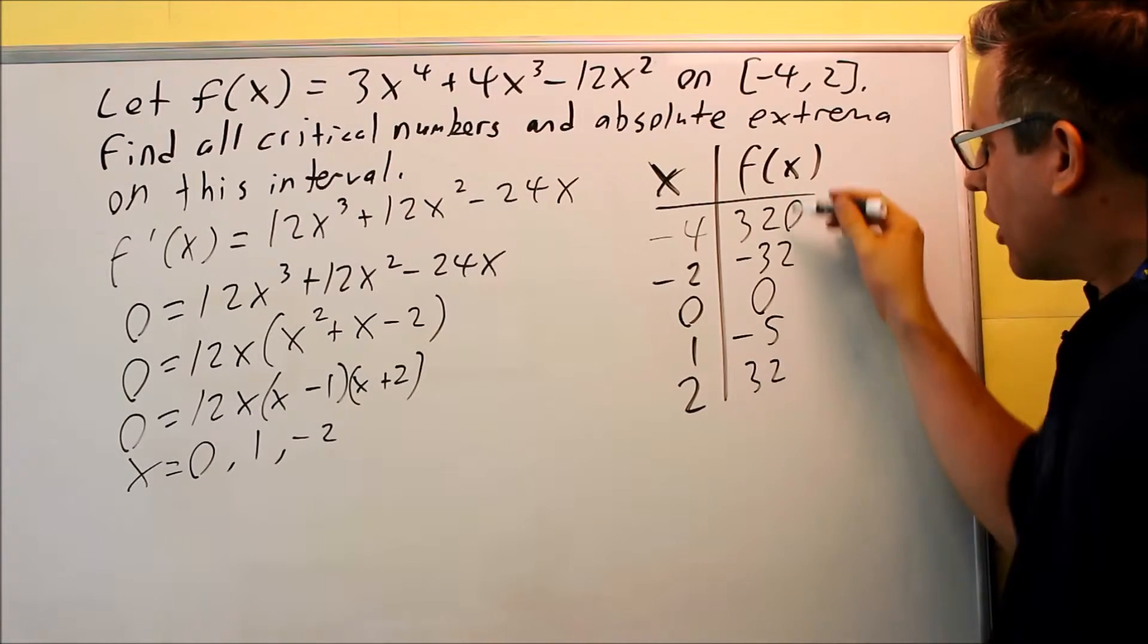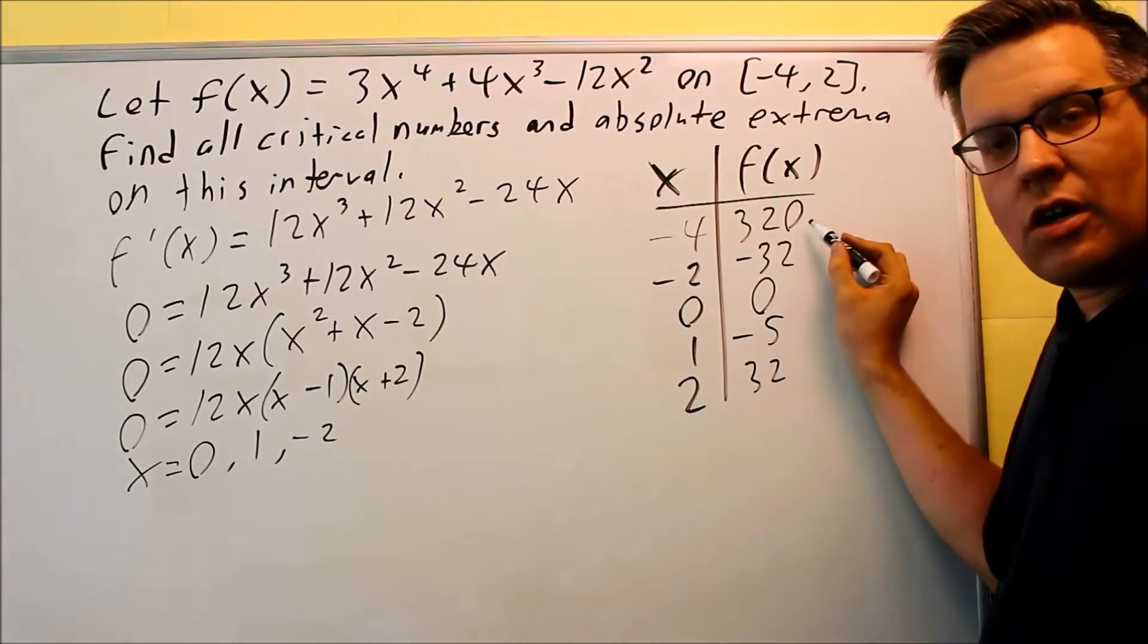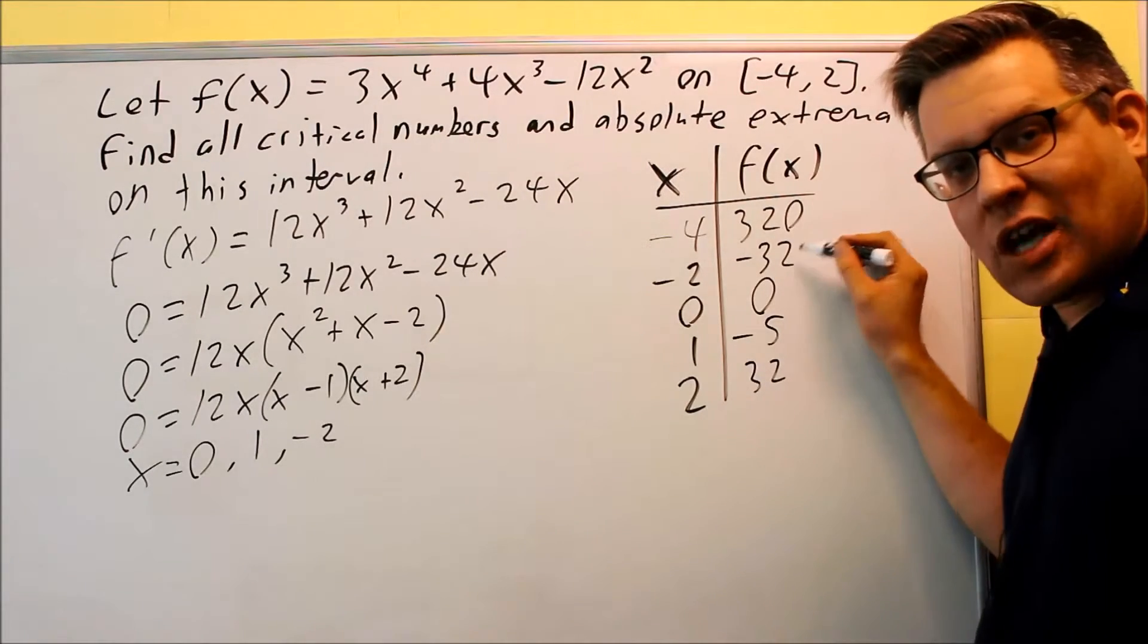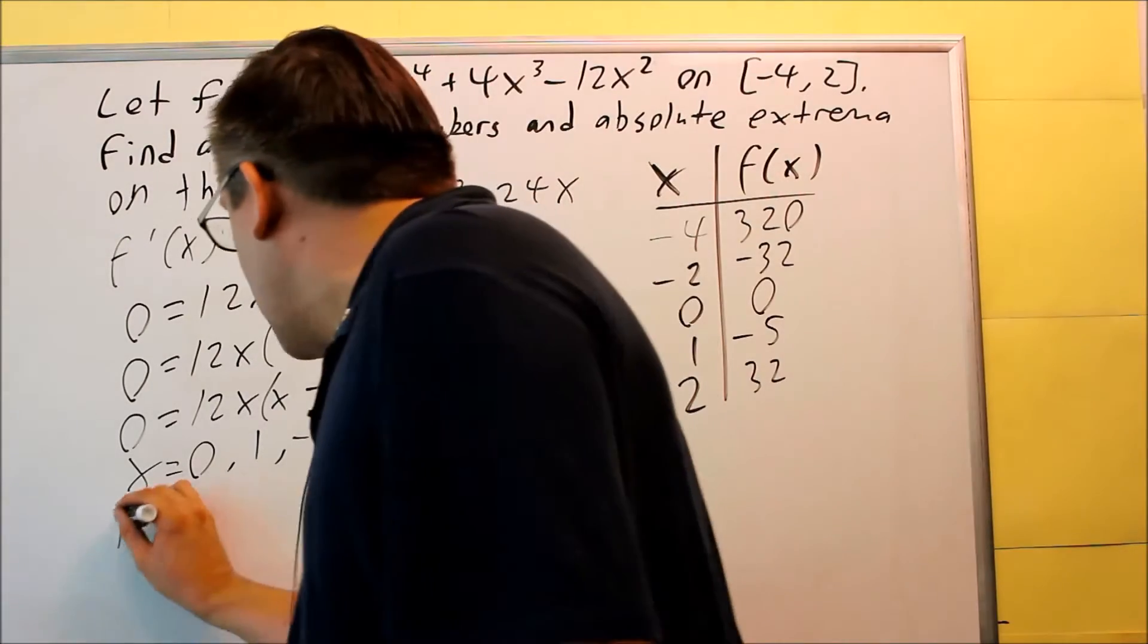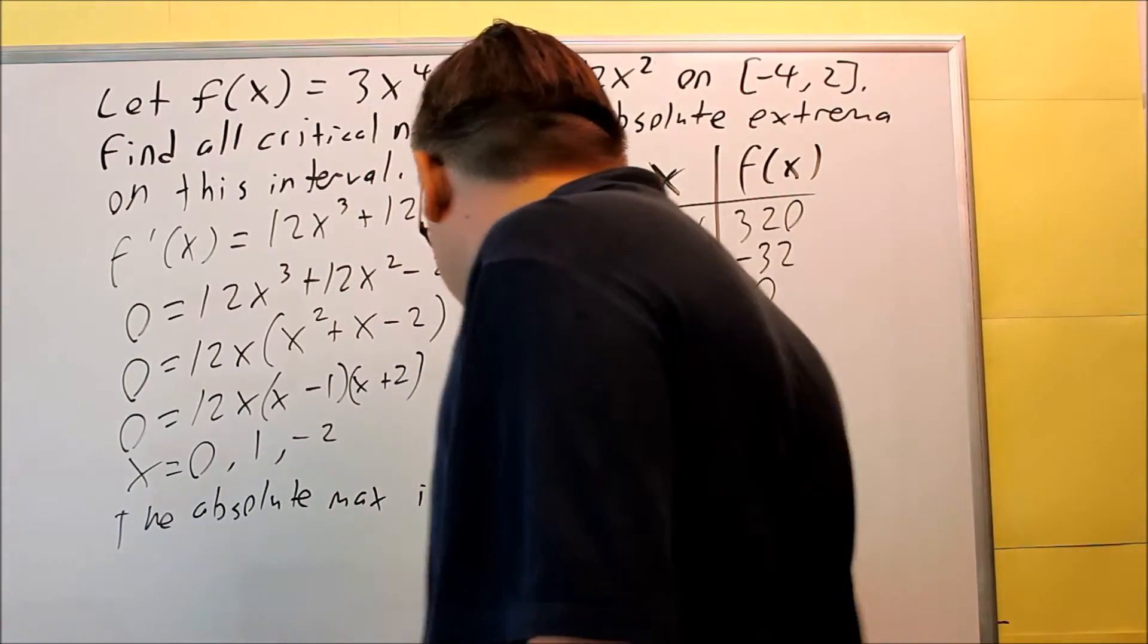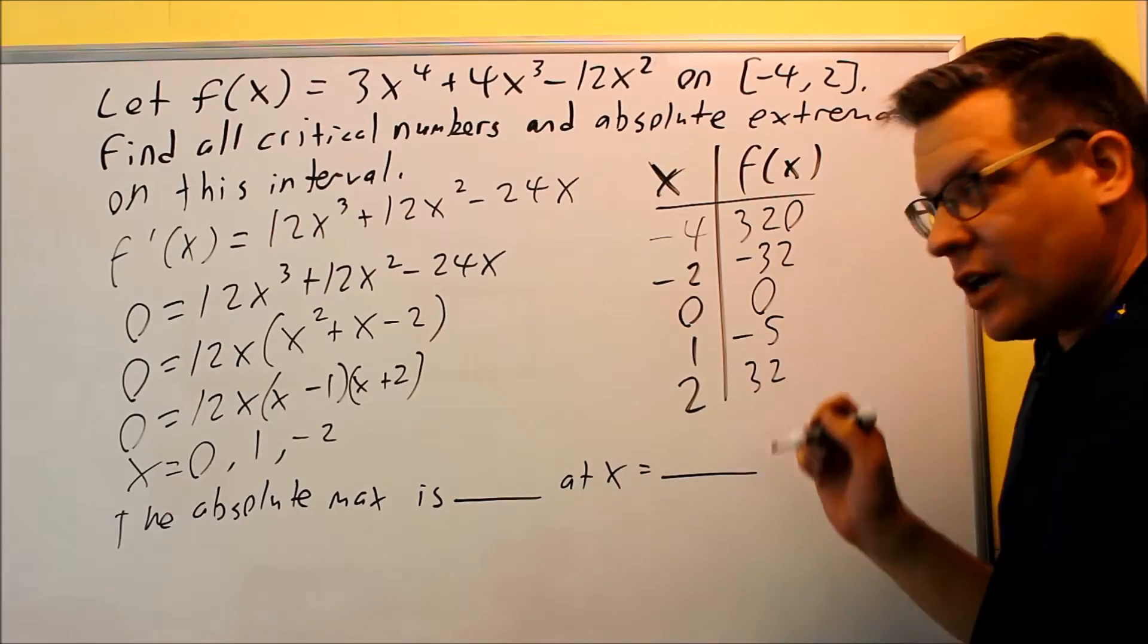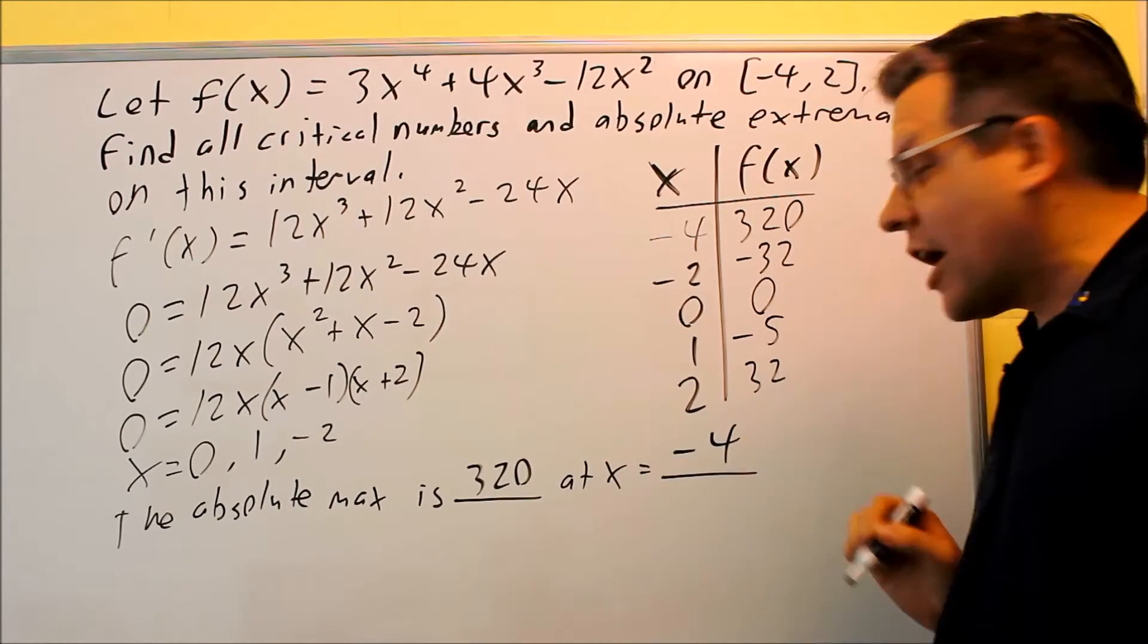Step number 4 would be to look at the table and see which is the highest and the lowest value, and that's how you're going to know what your answers are. The absolute max occurs right here at 320. The absolute min is going to occur here because that's the lowest y value. How are you going to write your answer? When you do these online in the online homework system, it'll say the absolute max is, there'll be a blank, and it'll say at x equals blank. All you're going to do is fill in the blanks. The absolute max is always going to be the y value, so you're going to put 320 in there. It occurs at x equals negative 4. That's how you write your answer.